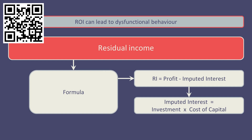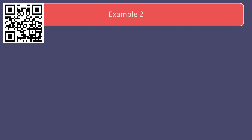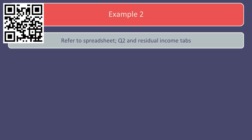Generally, if the residual income is positive, the investment is acceptable to the division. Let's examine residual income in the case of the two franchises, X and Y, which are considering the same two investment opportunities.